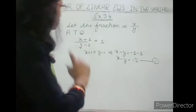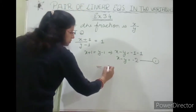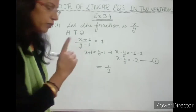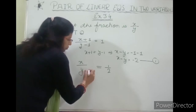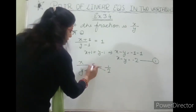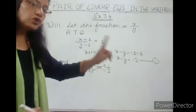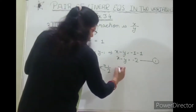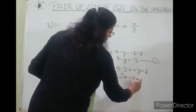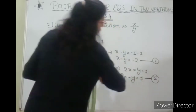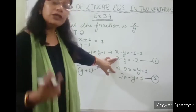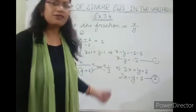The second condition: it becomes one upon two if we only add one to the denominator — they are not changing the numerator. Cross multiply, send two to this side and y plus one to this side: 2x equals y plus one. Rearranging: 2x minus y equals one. This is equation number two.